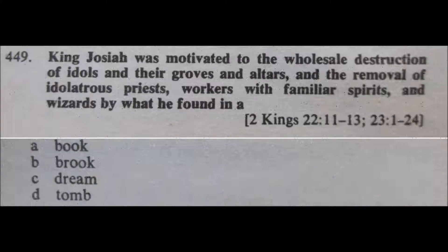Question 449: King Josiah was motivated to the wholesale destruction of idols and their groves and altars and the removal of idolatrous priests, workers with familiar spirits, and wizards by what he found in: A. A book, B. A brook, C. A dream, or D. A tomb. I am fairly certain the answer here is A, book, because I remember that Josiah found the book and they read it. I'm going to pick A, book, for 449.